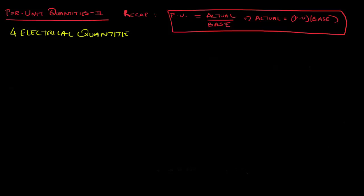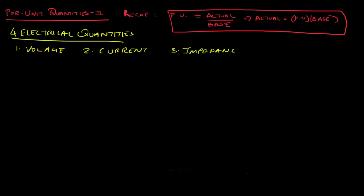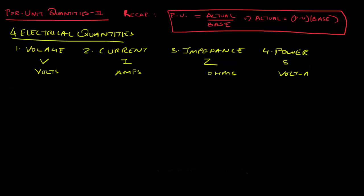The four electrical quantities we deal with most often are: voltage V, current I, impedance Z, and electrical power — specifically complex power S. The units are volt-amps for complex power, not watts; watts is for real power P.